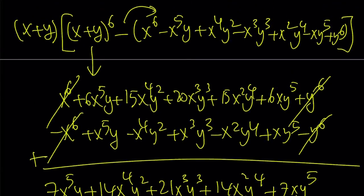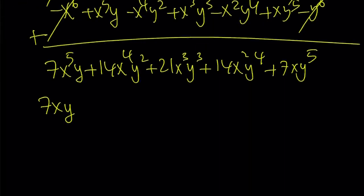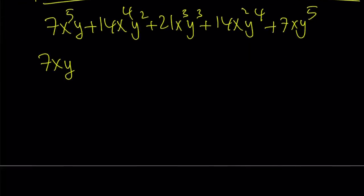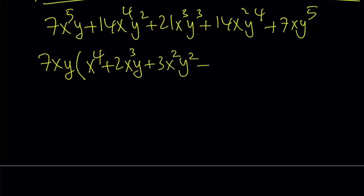Don't forget, we still have an x plus y as one of the factors — we're going to add that later. So factoring out seven x y, you're going to get x to the fourth power plus two x cubed y plus three x squared y squared plus two x y cubed plus y to the fourth. And of course we have an x plus y as well — we're going to add that at the end. The expression inside the parentheses is still factorable.